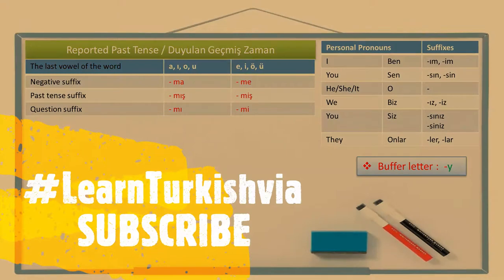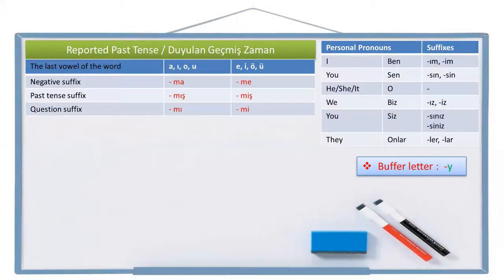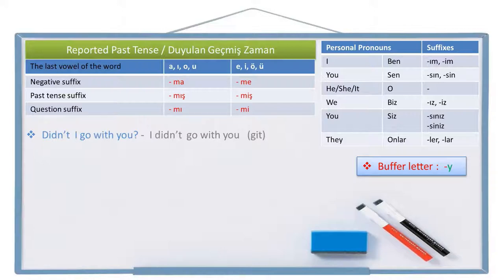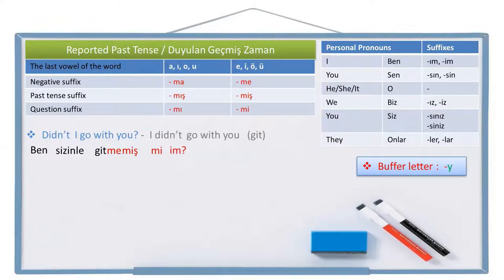Let's see the negative question sentences now. As you see on the chart, negative suffixes 'ma' or 'me' alternate according to two-way vowel harmony. Let's write an example. Didn't I go with you? The negative sentence is: I didn't go with you. Go is 'git'. Person pronoun I is 'ben', with you is 'sizinle', go is 'git', not go is 'gitme', didn't go is 'gitmemiş'. Leave a space and write the question suffix 'mi' and the person pronoun suffix. Two vowels are together, so I need a buffer letter. Ben sizinle gitmemiş miyim? Didn't I go with you?